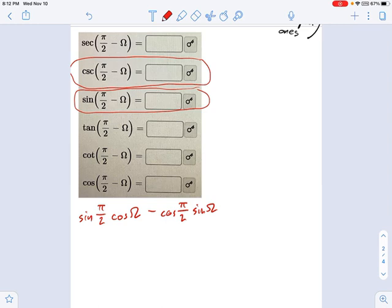Now, sine pi over 2, you know your unit circle, that's just equal to the number 1 times cosine of omega. Cosine pi over 2, you remember your unit circle, that's the number 0 times sine of omega. Now, 0 times anything is just 0, so we cross that out.